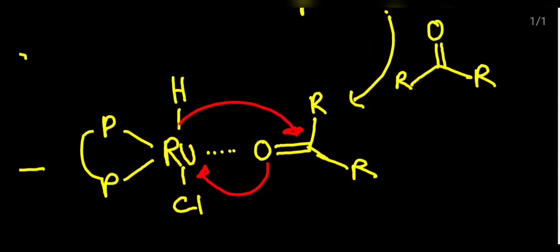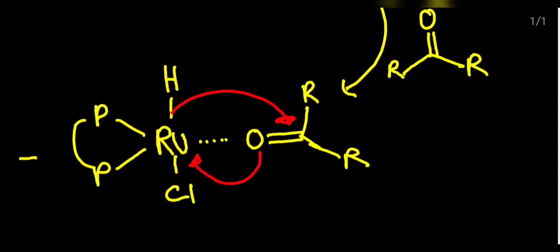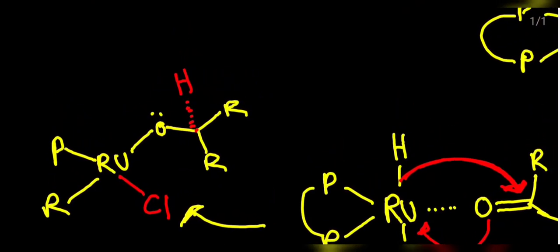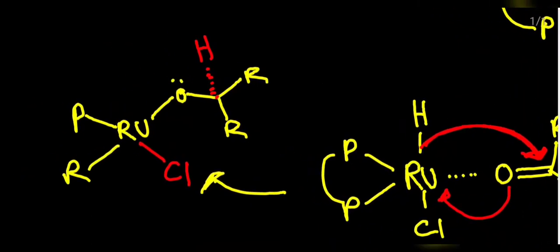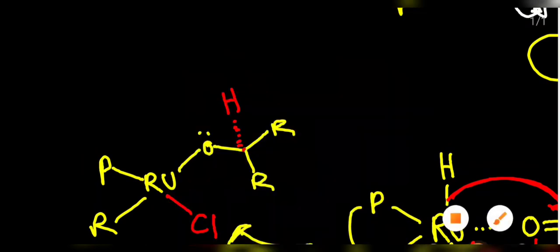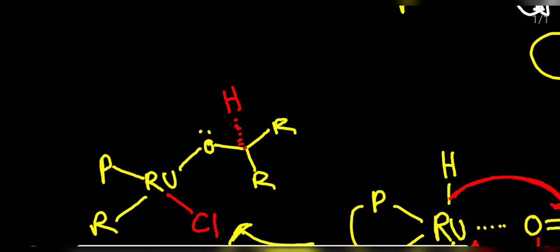There is a kind of association between this complex and the ketone molecule. In the next step, if we observe this complex, the H as a hydride ion will attack over the carbonyl carbon, and the oxygen will coordinate to the ruthenium. The structure will look like this. After that, the negative charge on this oxygen will form a bond with the ruthenium. The HCl molecule which was initially released in the first step is still present in the system — HCl has the H⁺ ion and the Cl⁻ will be free.